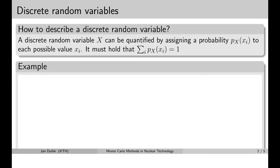We can denote each possible value by xi and the associated probability we can denote by pX. Now it must hold that if you sum up probability for each possible value it must equal 1 exactly.